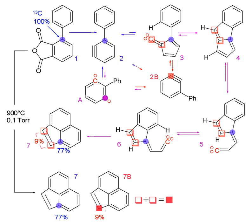The irreversible reactions provide the thermodynamic constraints needed to find the fluxes. A matrix is constructed that contains the stoichiometry of the reactions. The intracellular fluxes are estimated using an iterative method in which simulated fluxes are plugged into the stoichiometric model. The simulated fluxes are displayed in a flux map, which shows the rate of reactants being converted to products for each reaction. In most flux maps, the thicker the arrow, the larger the flux value of the reaction.